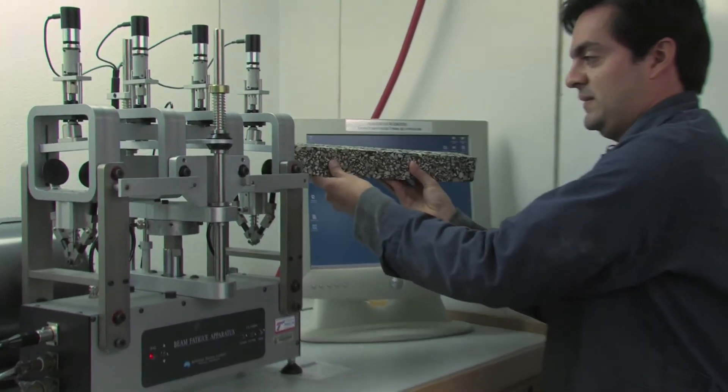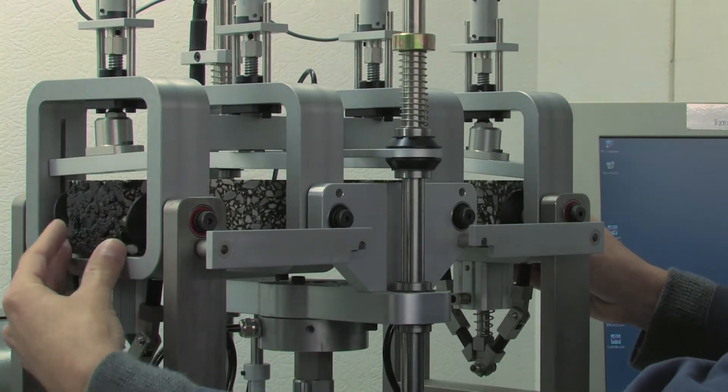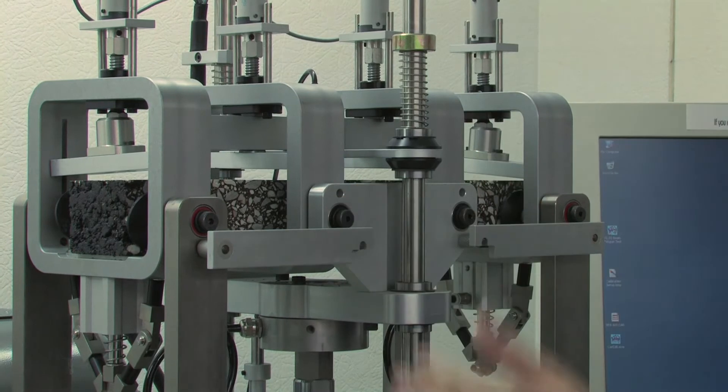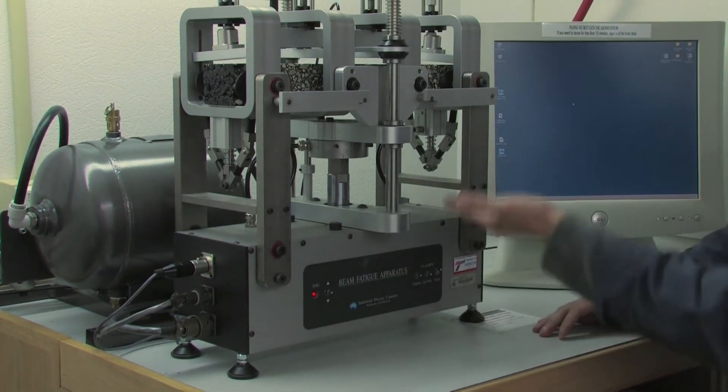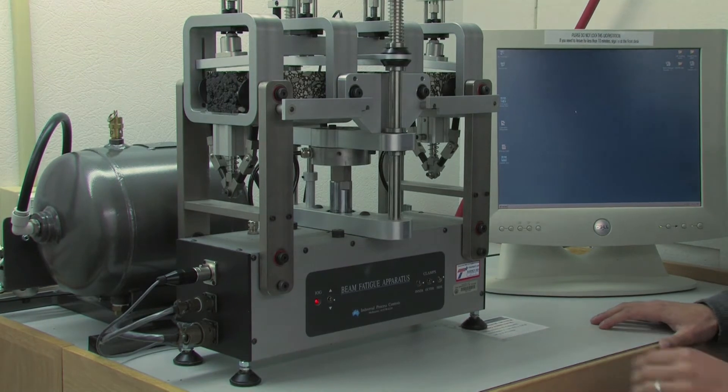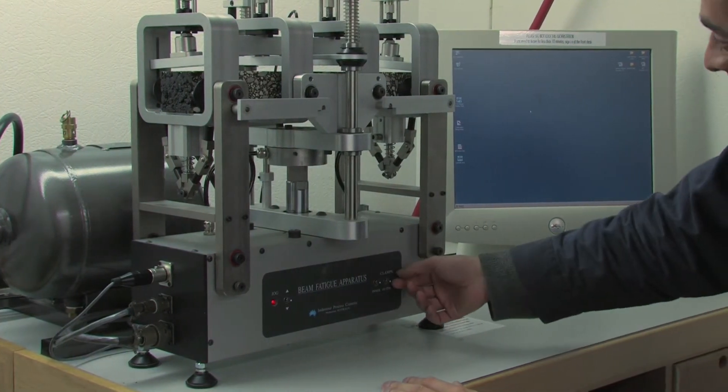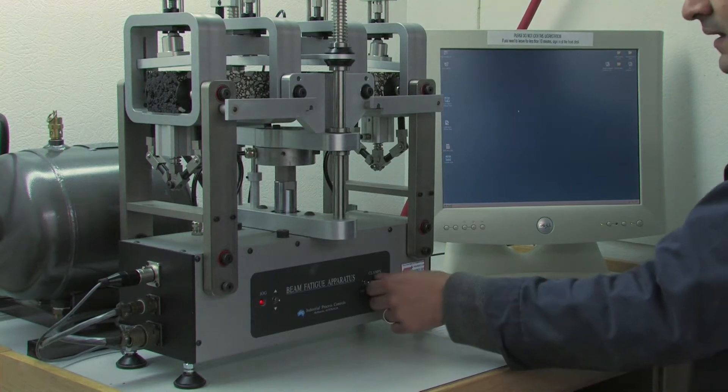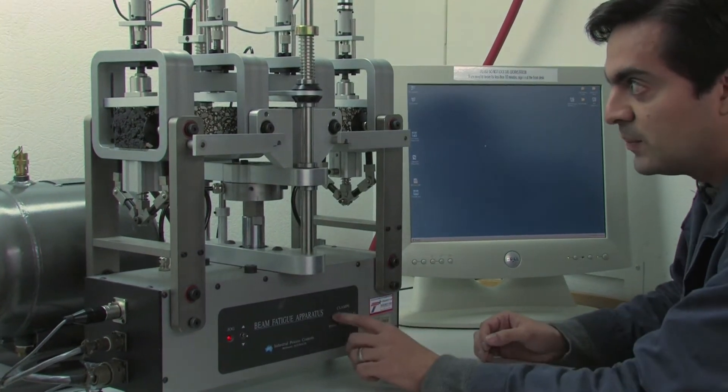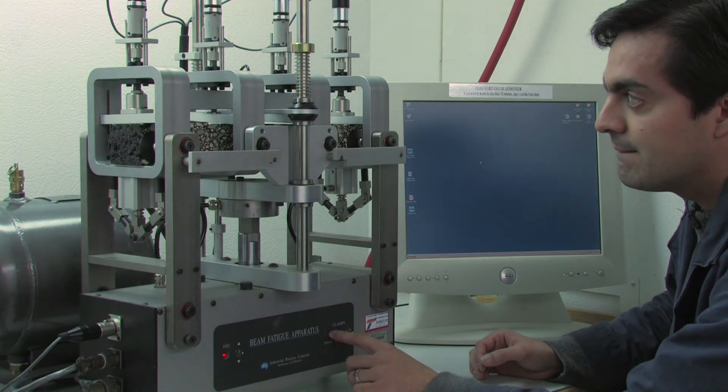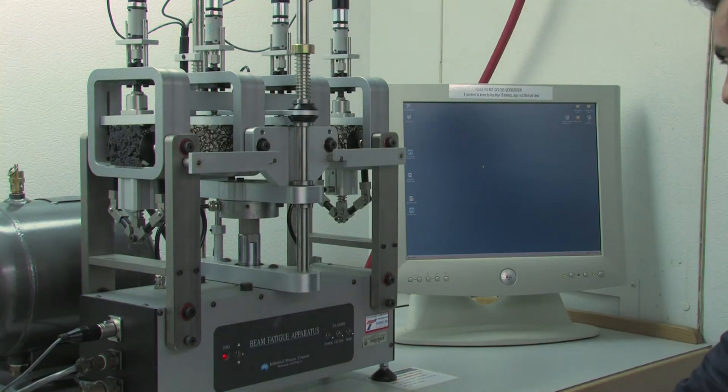The first thing we need to do is place our sample in the equipment, and we need to make sure that it's resting on the four supports correctly. We ensure that by playing a little bit with the yoke so that it's laying correctly. Once it's evenly sitting, the first thing we do is lock the specimen in place, and then we lower first the outer supports and then the inner supports.